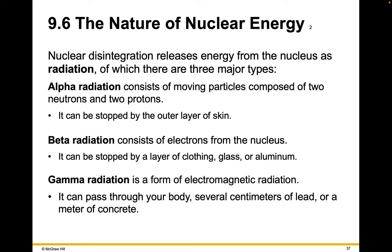Nuclear disintegration releases energy from the nucleus as radiation. There are three major types of radiation you should know. Alpha radiation consists of moving particles composed of two neutrons and two protons — it can be stopped by the outer layer of skin. Beta radiation consists of electrons from the nucleus and can be stopped by a layer of clothing, glass, or aluminum. Gamma radiation is a form of electromagnetic radiation that can pass through your body, several centimeters of lead, or even a meter of concrete.